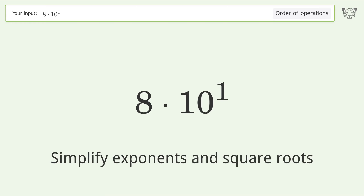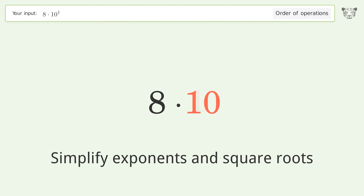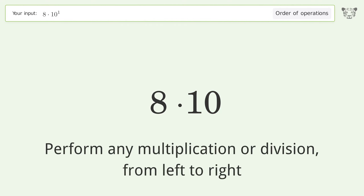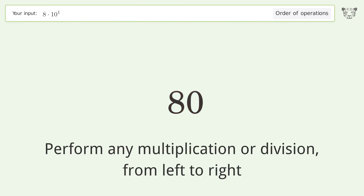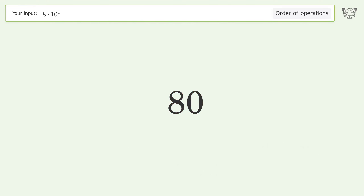First, simplify exponents and square roots: 10 to the power of 1 equals 10. Then perform any multiplication or division from left to right: 8 times 10 equals 80. And so the final result is 80.